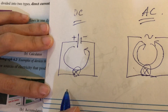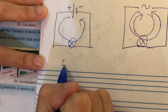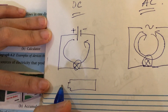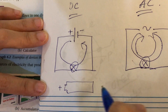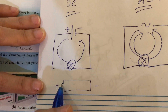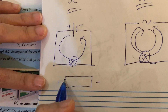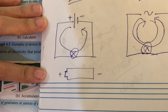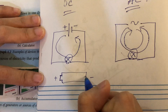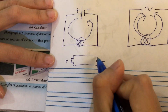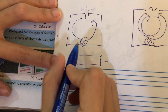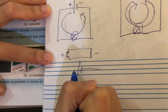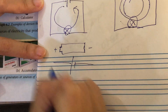I hope you remember how a battery looks like. The longer line is positive and the shorter line is negative — there is a curve inside. So this is positive and this is negative. This is one dry cell.